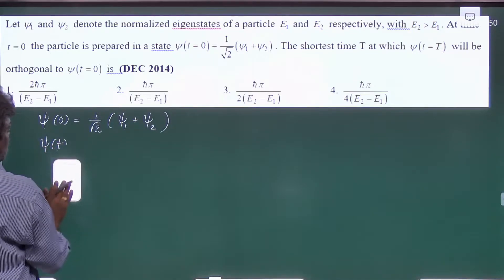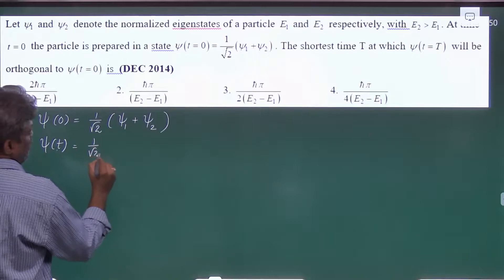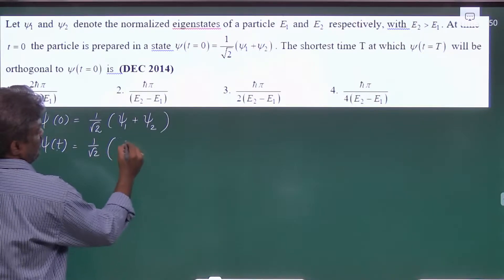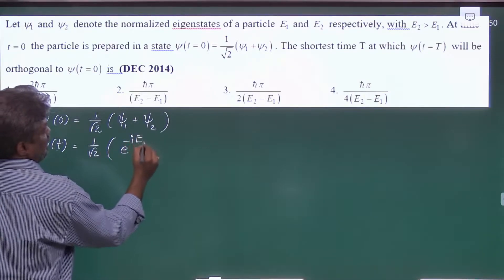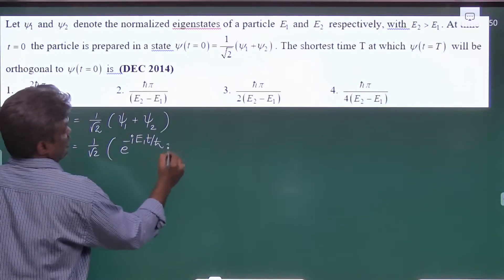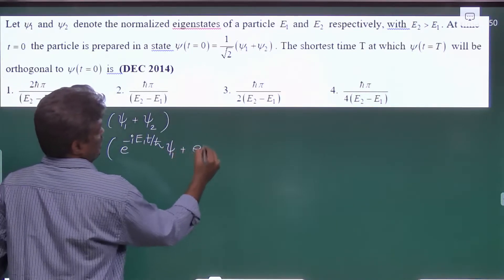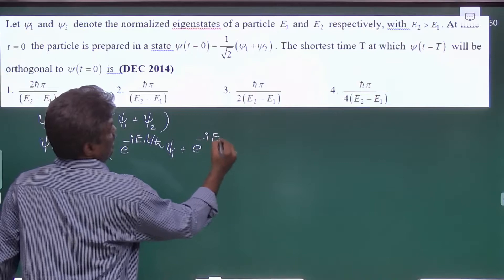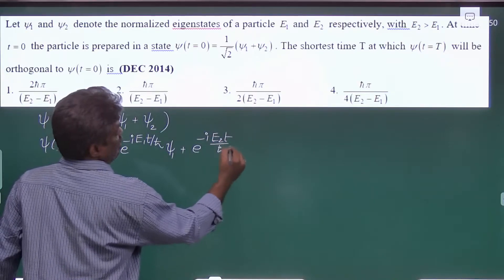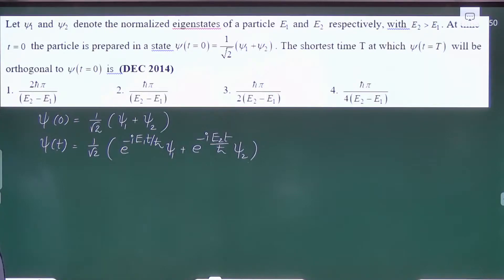Psi of t will become—we just multiply with the phase factor e raise to minus i E1 t by h cross into Psi 1 plus e raise to minus i E2 t by h cross Psi 2.